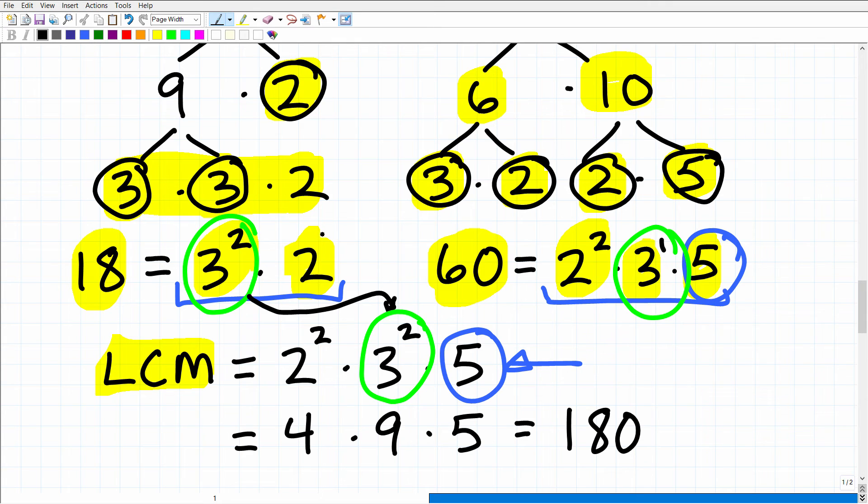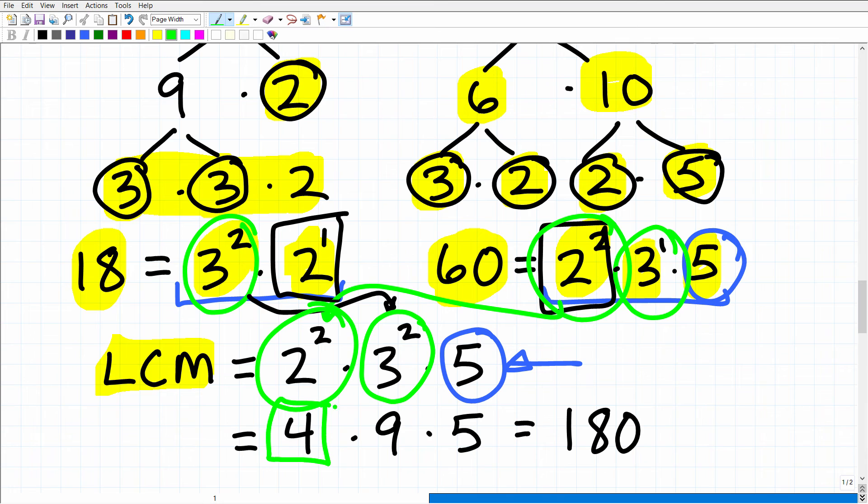Here we have 2 to the 1st right here, and this is 2 to the 2nd. So which one are we going to take? The highest power, 2 to the 2nd, and we'll have that in our LCM. So now we have 2 squared times 3 squared times 5. 2 squared is 4. 3 squared is 9 times 5. And when you do this multiplication right here, you get 180.